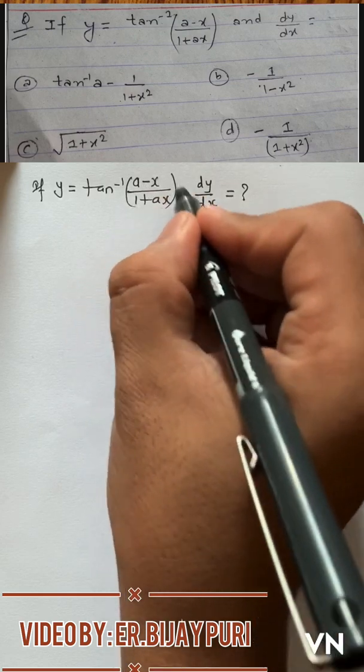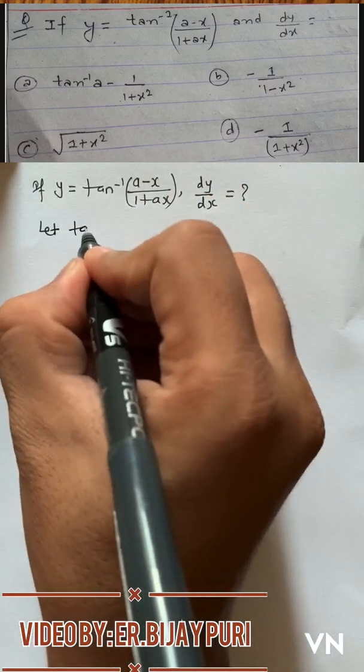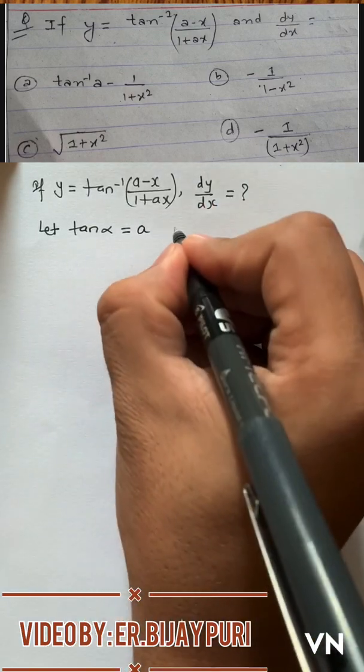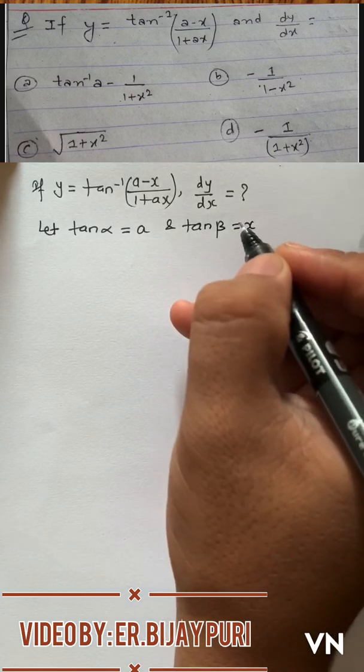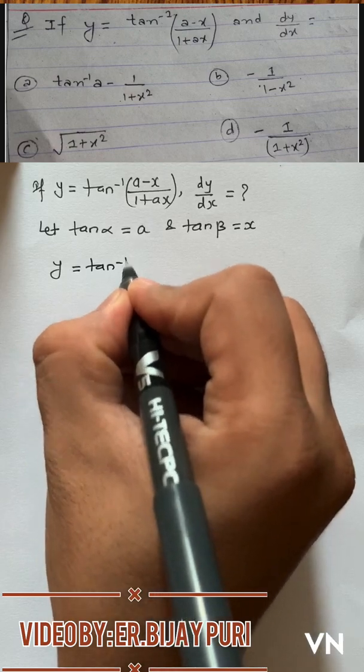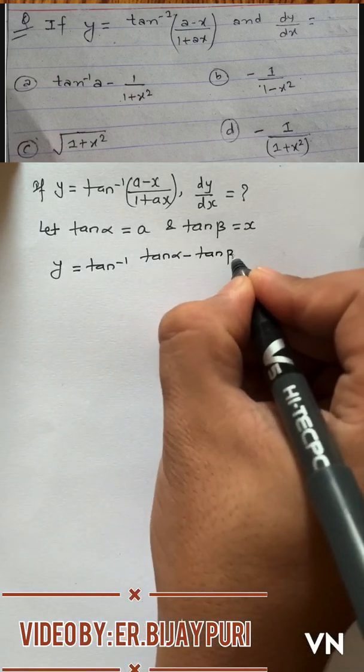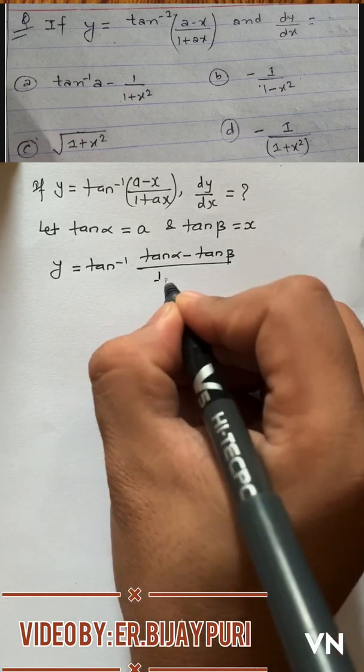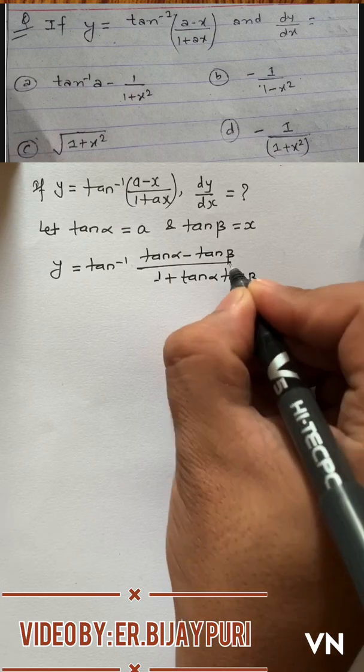So let's let tan alpha equals a and tan beta equals x. So we can write y equals tan inverse of (tan alpha minus tan beta) by (1 plus tan alpha tan beta).